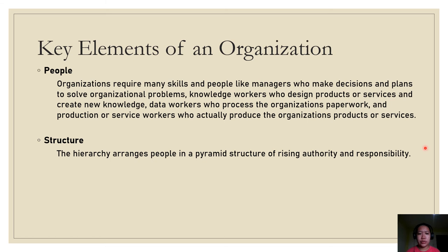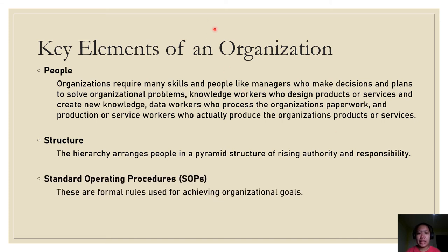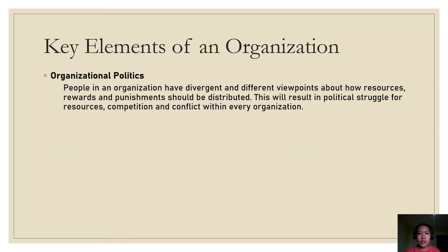For structure: the hierarchy arranges people in a pyramid structure of rising authority and responsibility. The upper levels consist of managerial, professional, and technical employees, whereas the lower levels consist of operational employees. Another element of an organization is standard operating procedures — these are formal rules used for achieving organizational goals, and firms' business processes are based on standard operating procedures.